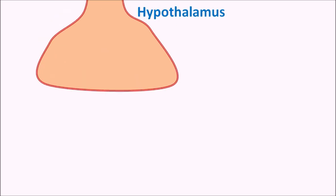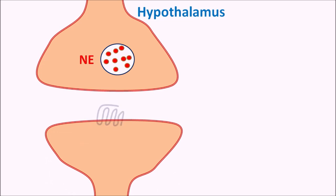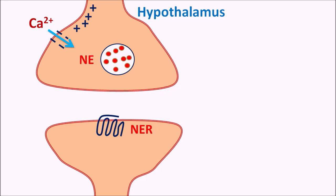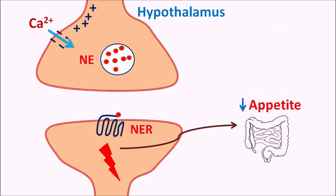The exact mechanism is not fully known, but at the hypothalamus, the sympathetic system plays an important role in controlling appetite. Sympathetic neurons from the hypothalamus store norepinephrine, and postsynaptic neurons have norepinephrine receptors such as beta-adrenergic receptors. When a stimulus reaches the presynaptic neurons, calcium enters, resulting in calcium-mediated exocytosis where norepinephrine is released and acts on postsynaptic receptors, producing excitation. This signal is transmitted to control appetite.